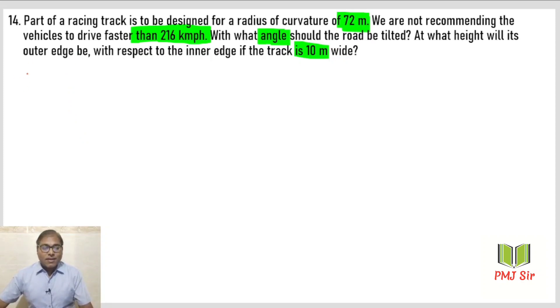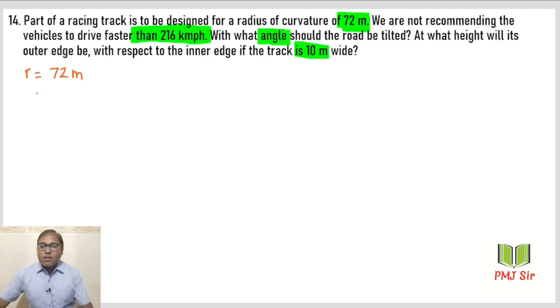Toh yahan pe given data likhte hain. Radius r ka value hai 72 meters. Velocity ka value: actually yeh v_max hai, jo 216 kilometers per hour given hai.